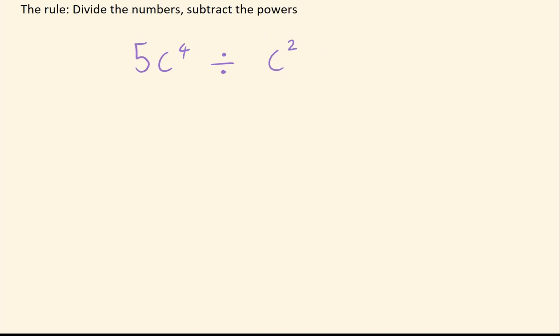Last example. Again, if you've got no numbers, that's absolutely fine. Basically, whenever you don't see a number, it basically means that number is 1. So here you're doing 5 divided by 1, which is 5. 4 take away 2 gives you 5c to the power of 2, or c squared.